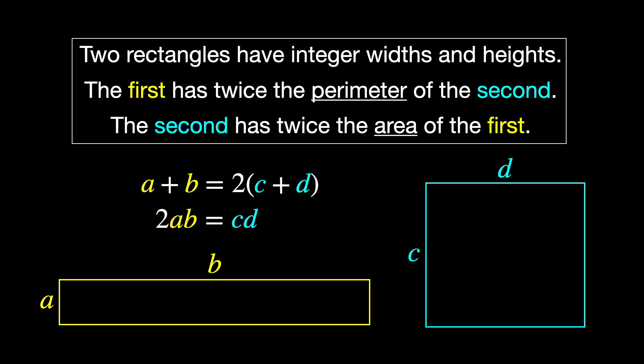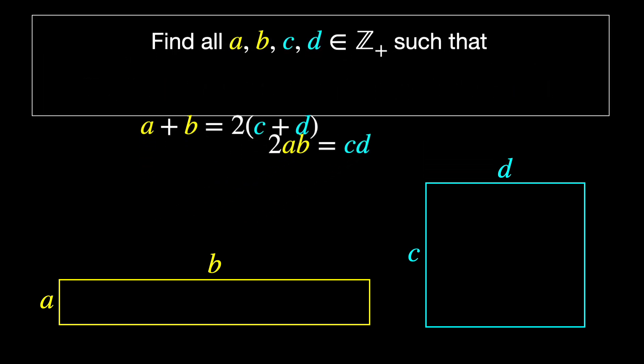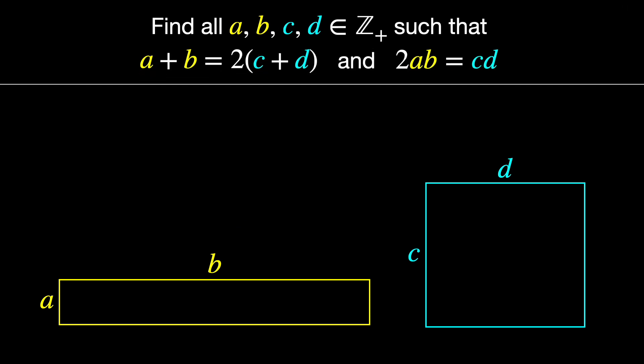And with that, we can restate the challenge as find all positive integers A, B, C, and D such that these two equations are satisfied. Since switching the width and the height of a rectangle just rotates it and doesn't really make a difference, let's also say that A is less than or equal to B, and C is less than or equal to D, just to eliminate redundancy.